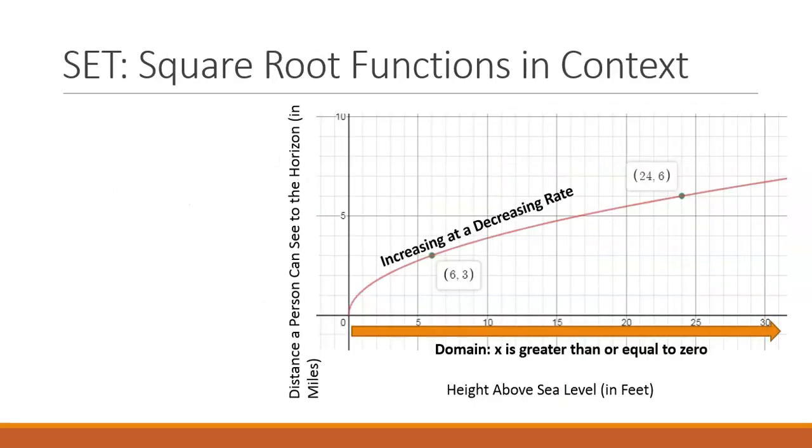In the set, we have a function in context, which means a word problem. The question states the relationship between the height of the person above sea level in feet and the distance a person can see to the horizon in miles can be modeled by this graph. Let's look at our units. x here represents the height measured in feet above sea level, and the y value is the distance a person can see to the horizon in miles.